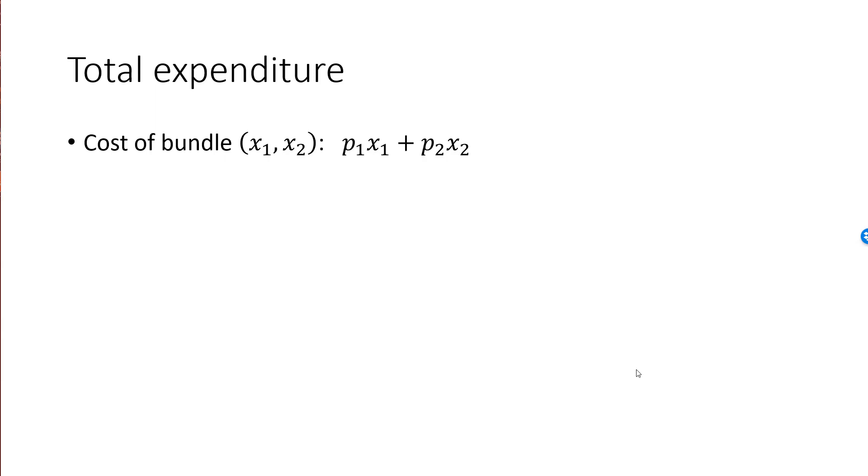We can view this expression as a function that we call TE for total expenditure. We will typically view this as a function of the X variables, since those are the ones that we try to explain. Prices will for most parts remain constant. Note that the total expenditure function is a linear function in both of the X variables.